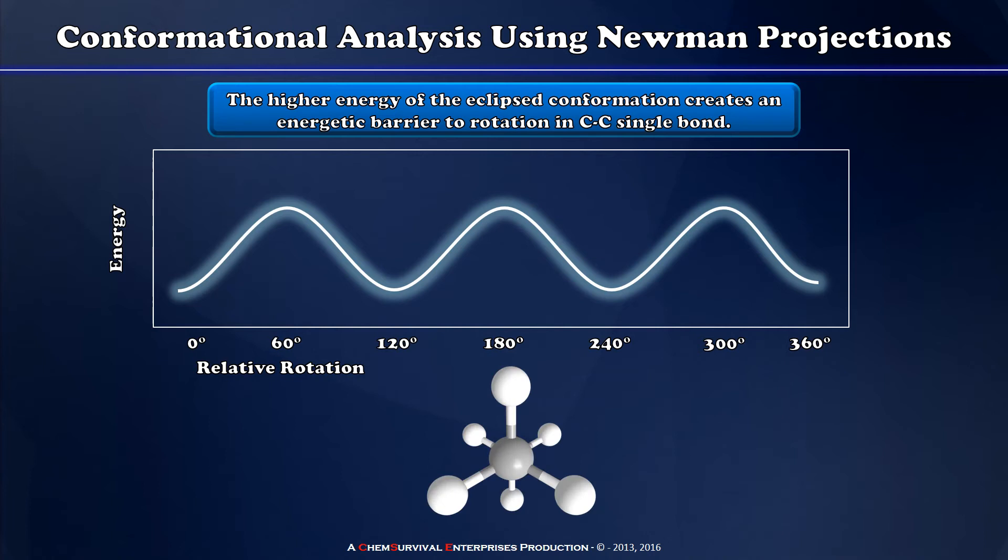Let's take a look at my ethane molecule again. Right now as I've drawn it, the hydrogen atoms on the back are as far away as they can possibly be from those hydrogen atoms on the front. This is because the bond dihedrals are 60 degrees, and we call this a staggered conformation.